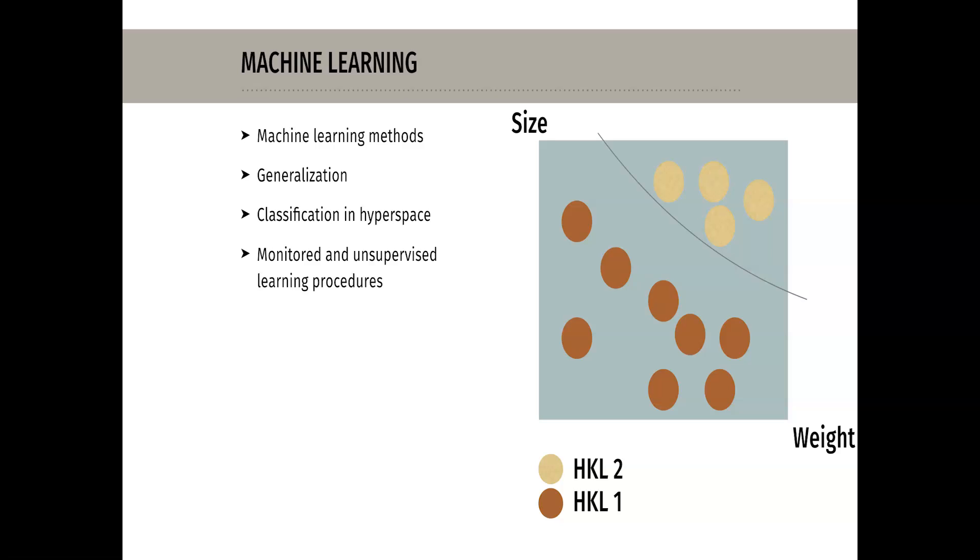In other examples, such as the classification of real estate, a variety of features can be used whose feature vectors span a multi-dimensional hyperspace. Analogous to the two-dimensional case, a function is also taught in hyperspace which classifies samples accordingly. A graphical representation, as in the two-dimensional case, is then of course no longer possible.